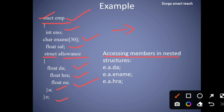For accessing members in nested structures, you need to use both variables — struct one variable and also struct two variable. Here, 'e' is the employee variable, so to access a member you use e.a.da. If you want to access any member of a nested structure, you need to include both variables, for example: e.a.da, e.a.ename, e.a.hra — in this way you can access the members of nested structures.